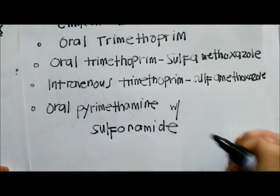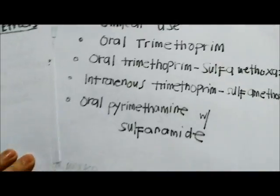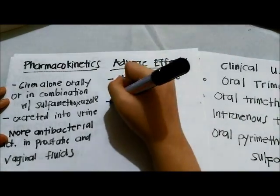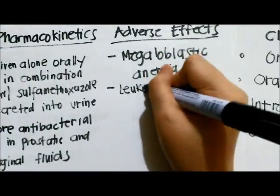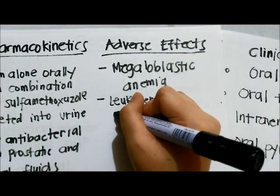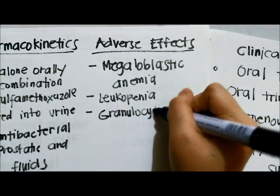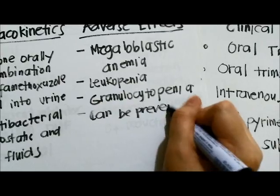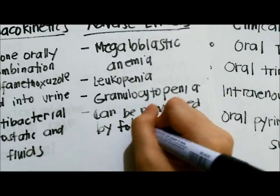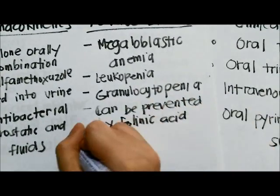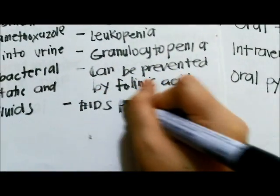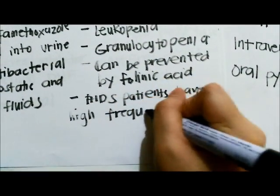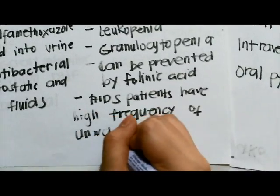The adverse effects of these drugs include megaloblastic anemia, leukopenia, and granulocytopenia, which can be prevented by folinic acid. Patients with AIDS and Pneumocystis pneumonia have a particularly high frequency of adverse reactions to trimethoprim-sulfamethoxazole.